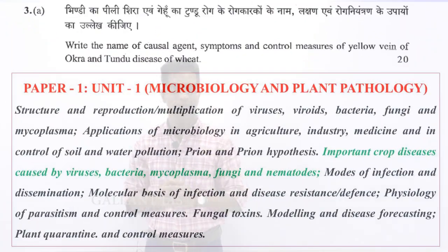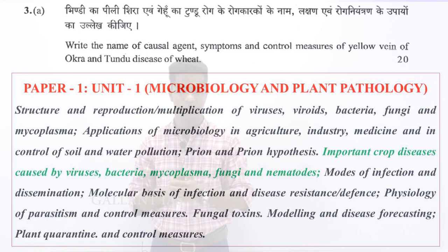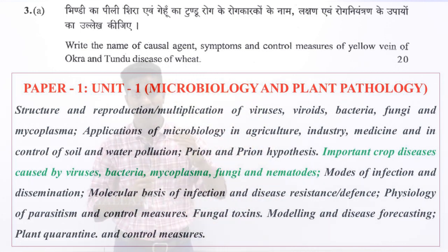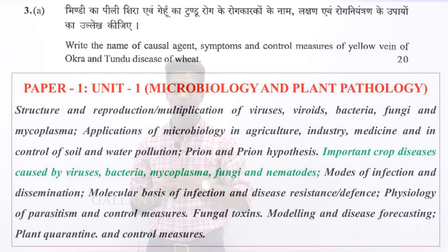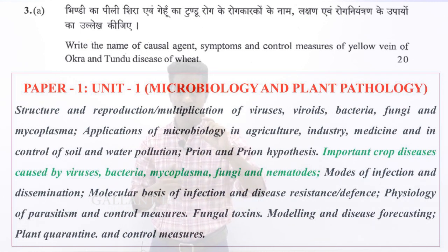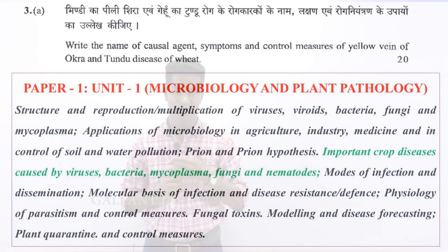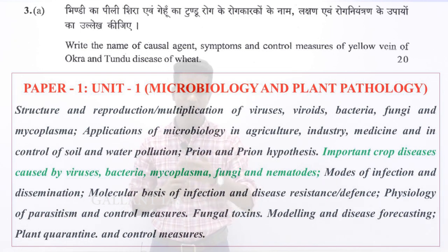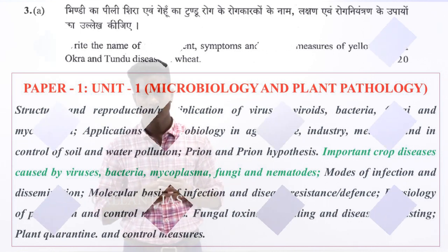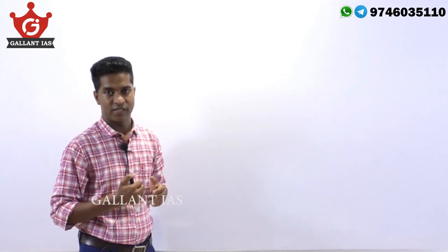The question is from the microbiology and plant pathology unit of Paper 1. This is a very important topic, and every year you get at least two or three questions from this topic — specifically from important crop diseases caused by nematode, fungi, virus, bacteria, and mycoplasma. So let us address the question.